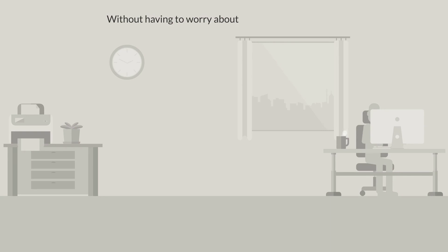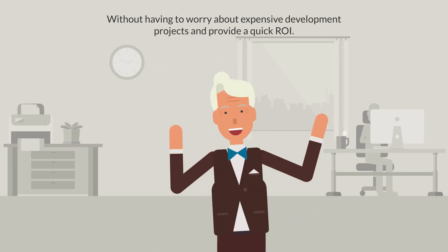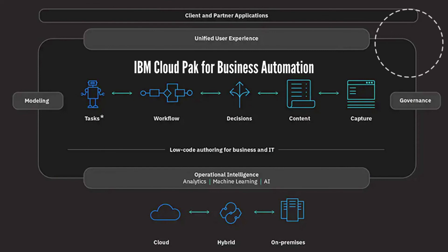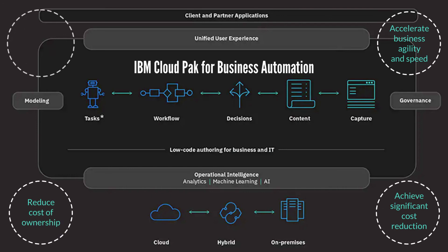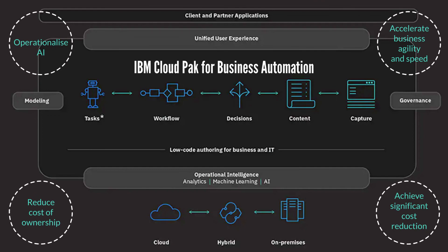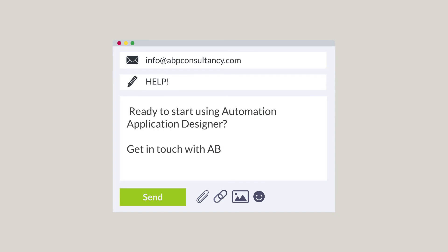Without having to worry about expensive development projects, low-code provides quick ROI. You can try IBM Business Automation Application Designer as a part of IBM Cloud Pak for Business Automation, unifying information, processes, and users to help you automate digital workflows on premises or on cloud. Ready to start using Automation Application Designer? Get in touch with ABP Consultancy today.